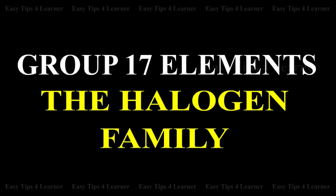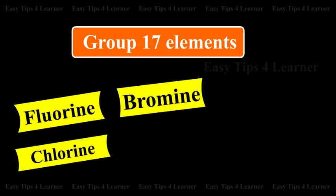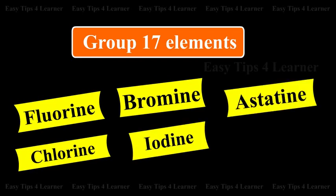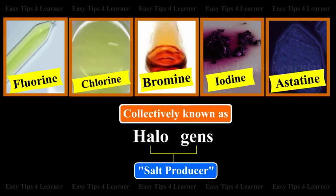Group 17: The Halogen Family. Group 17 of the periodic table contains the elements Fluorine, Chlorine, Bromine, Iodine, and Astatine. These are collectively known as Halogens. The name is derived from two Greek words meaning 'salt producer', because most of them exist in seawater.